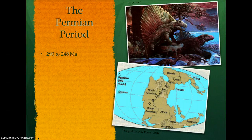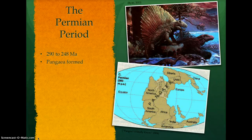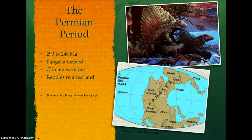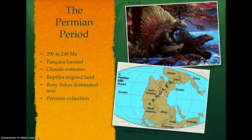Amniote vertebrates continued to evolve and diversify during the Permian period, which began around 290 million years ago. Pangea formed, creating severe climate extremes. Reptiles adapted to the massive temperature swings, while bony fishes and squid-like nautiloids dominated the seas. The Permian extinction, the largest mass extinction in Earth's history, saw the demise of about 90 percent of marine species and 70 percent of land animals living at the time.